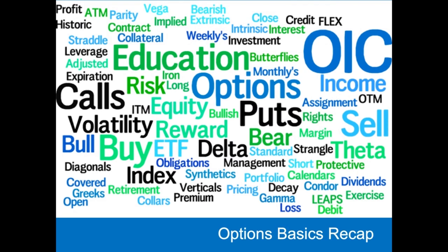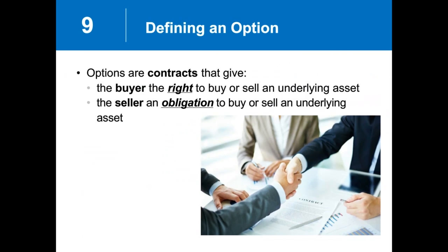Options are traded on an exchange, executed between a buyer and a seller. The buyer pays the option premium up front and owns the right to execute a transaction in an underlying asset — that would mean buying or selling shares of stock. The seller receives the premium up front, non-refundable, and in exchange takes on the obligation to potentially be required to execute a transaction in shares of stock.